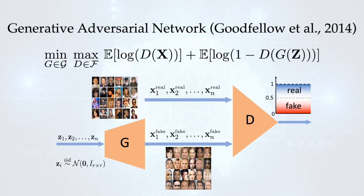Generative adversarial network approaches the unsupervised learning problem through a minimax game between two players, generator G and discriminator D. The minimax problem on this slide is the original GAN problem introduced by Goodfellow et al. in 2014.